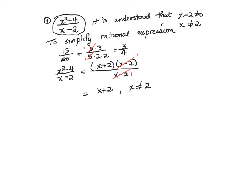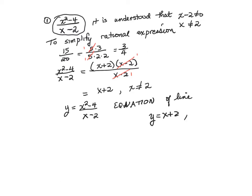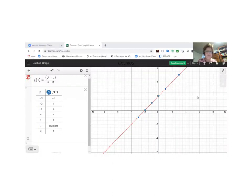Let's take a look at the graph of y equals x squared minus four over x minus two. We will see that it is the equation of the line y equals x plus two, but something very strange happens when x equals two.